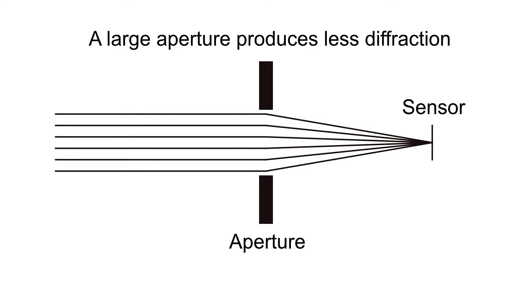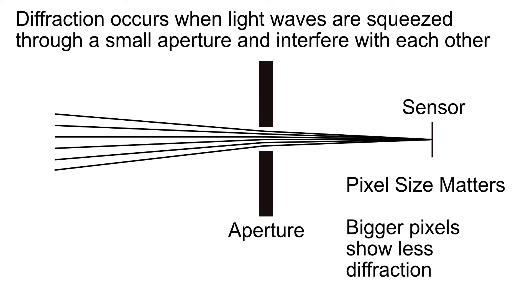Before we get started, we should really discuss what diffraction is really about. I'm not going to get technical with it because I'll bore everybody. Basically, it's the ability to focus on a point on the sensor and have it be sharp. When we're dealing with a large aperture, that's fairly easy. The problems come when we go to a small aperture — the light rays get squeezed together and they start to interfere with each other, and that interference causes the diffraction problem. So let's get started and look at those pictures.